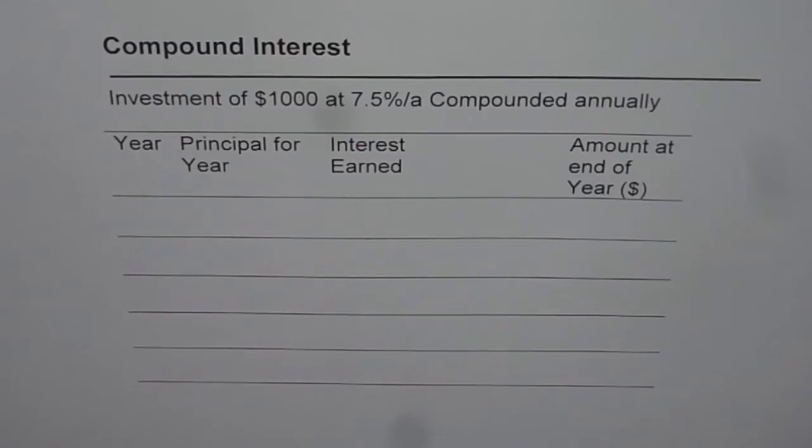When you are compounding, you get interest on interest and that's the reason why at the end, there is much higher growth. So, let's start with $1,000.